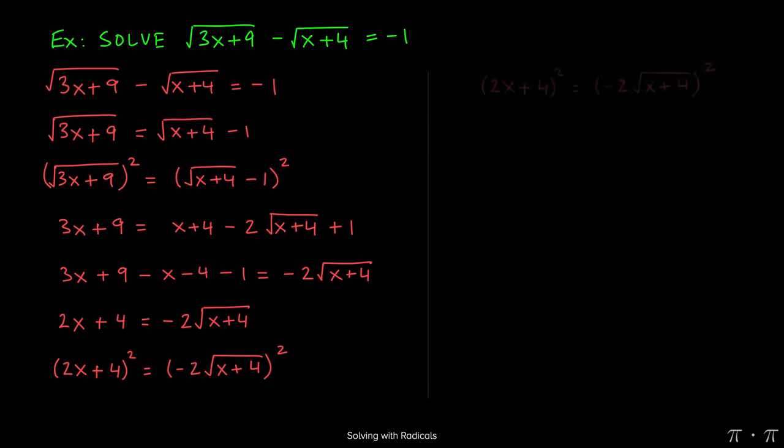The left-hand side when squared will give us 4x squared plus 16x plus 16. This can be verified by using the special product formula, or you can FOIL it out term by term.